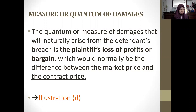Illustration D: A contracts to buy B's ship for 60,000 but breaks his promise. A must pay to B by way of compensation the excess, if any, of the contract price over the price which B can obtain for the ship at the time of the breach. For example, if B managed to secure another ship at 70,000, the gap is 10,000, so B can claim that 10,000 difference from the contract breaker.